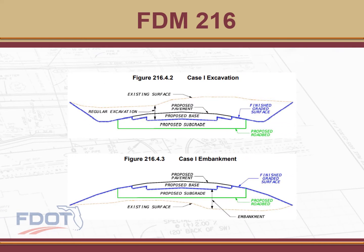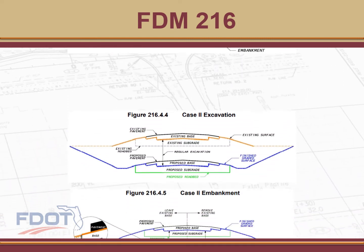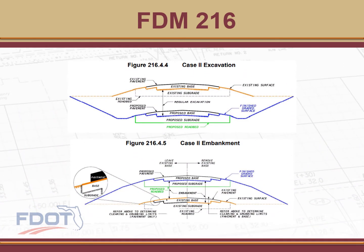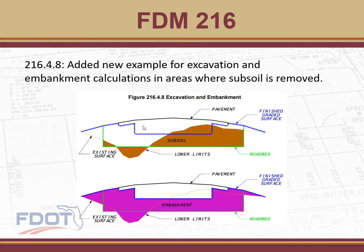Figures 216.4.2 and 216.4.3 are for Case 1 — Case 1 being construction over an existing surface. Figures 216.4.4 and 216.4.5 show Case 2, both excavation and embankment for construction over an existing roadway. And finally, Figure 216.4.8 was added to show excavation and embankment in areas where subsoil will be removed.